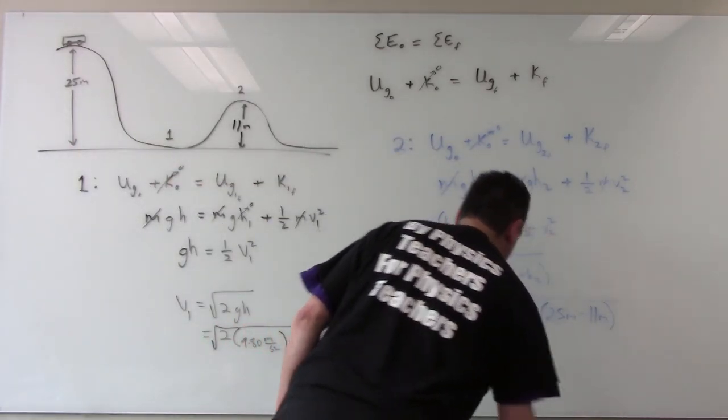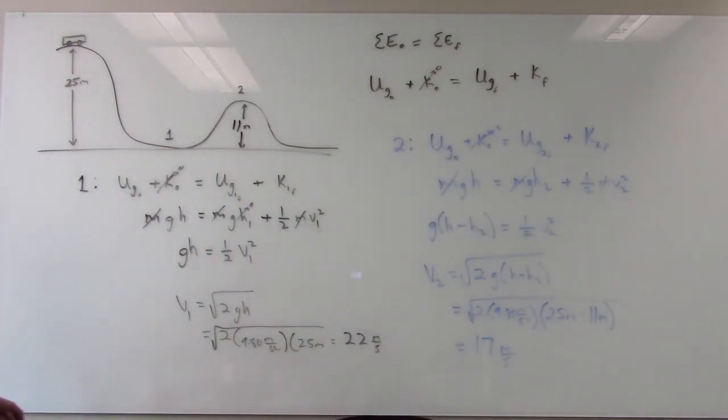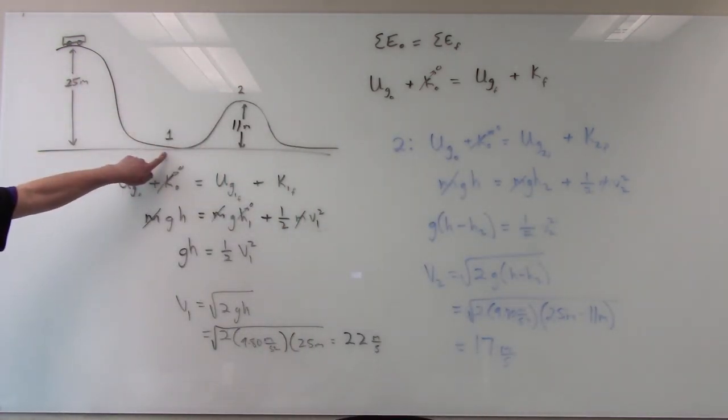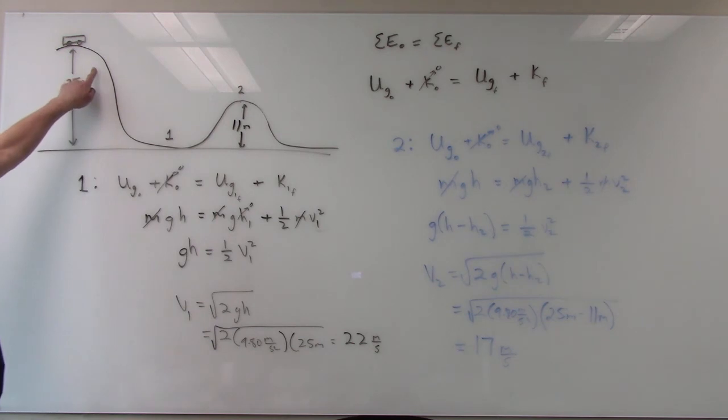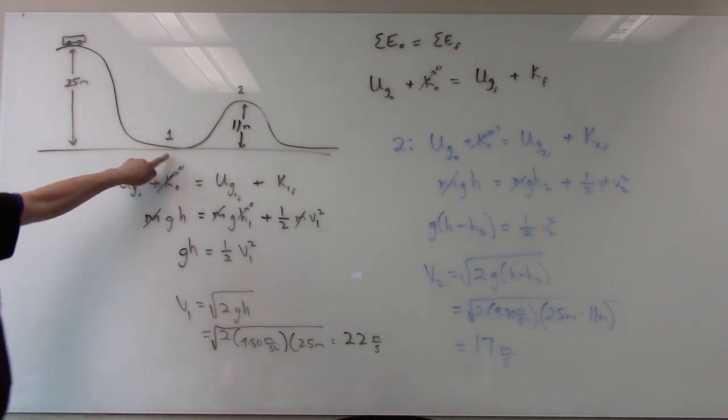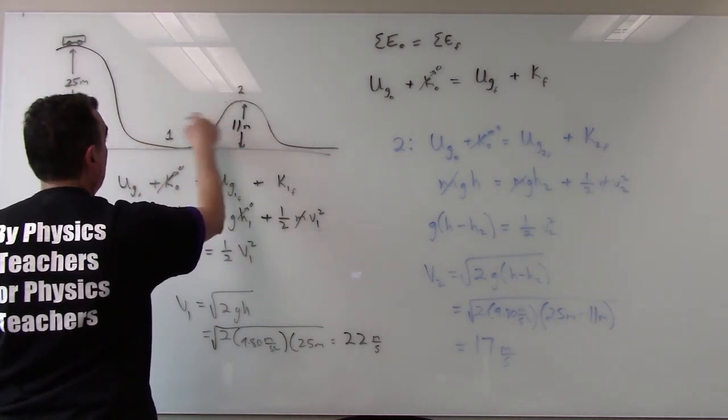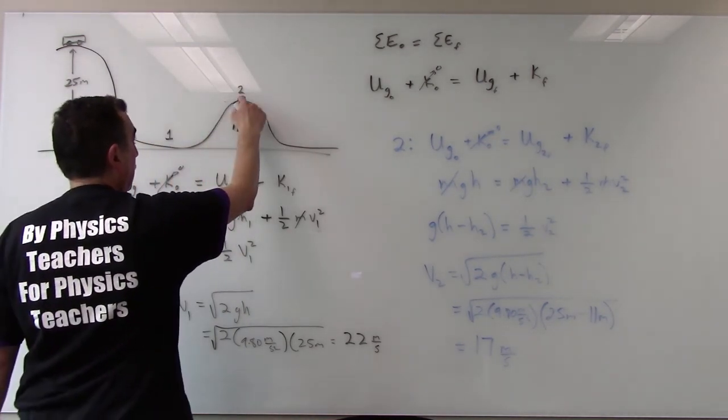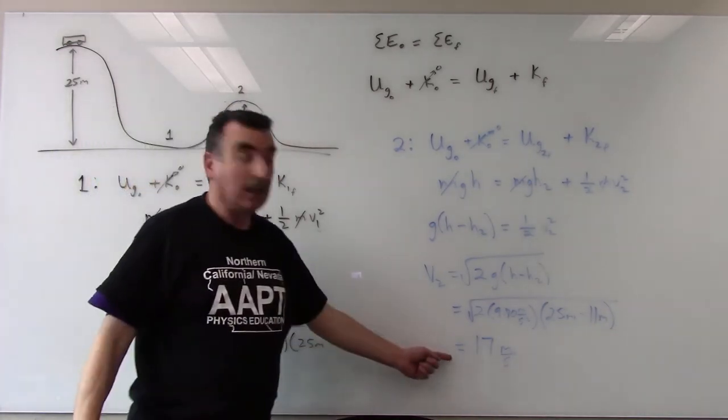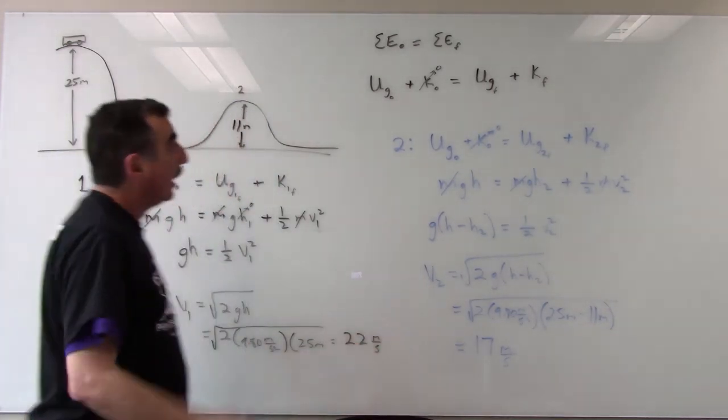So down here it makes sense it should be much faster because we're using all this potential energy to get down to this position. Some of the energy was used up here the potential energy to get into the kinetic energy so it should be a little less a little slower. Kind of a cool little problem.